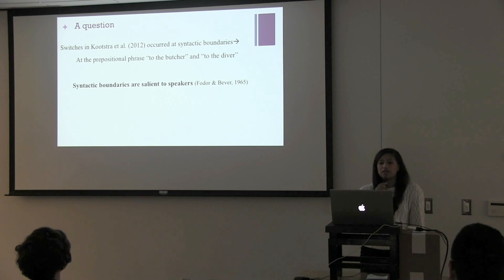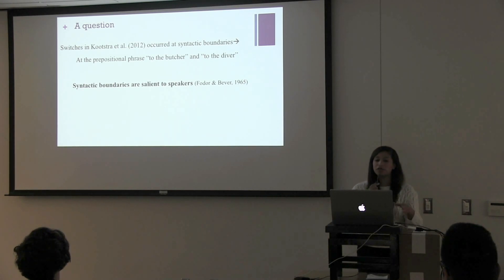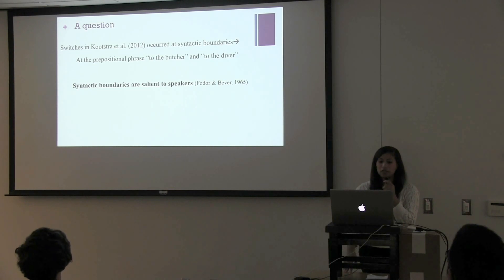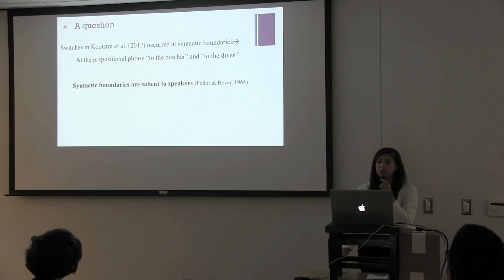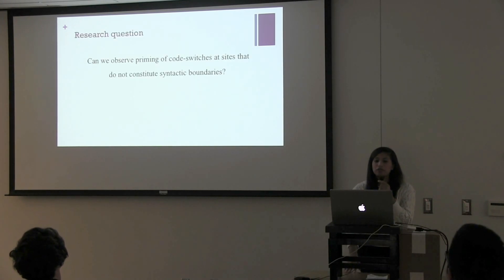After all, priming is an index of the presence of activation of stored representations of different types of knowledge. And if the participants in Kutstra et al.'s studies were not code switchers, then what type of representations were they accessing? This is an interesting question. Perhaps priming is occurring in speakers who normally do not code switch because of syntactic boundaries. Syntactic boundaries tend to be very psychologically real to all of us when we're speaking. So my research question is: can we observe priming of code switches at sites that do not constitute syntactic boundaries?